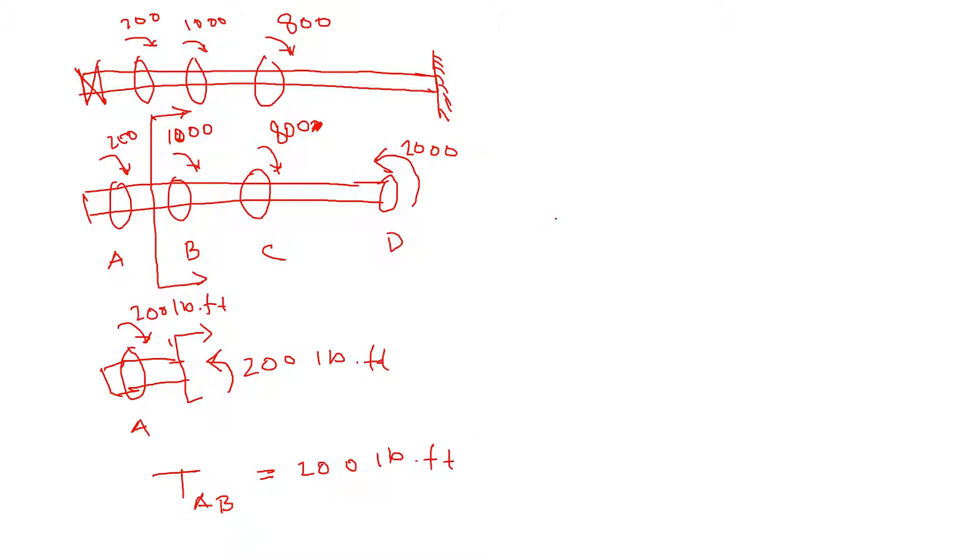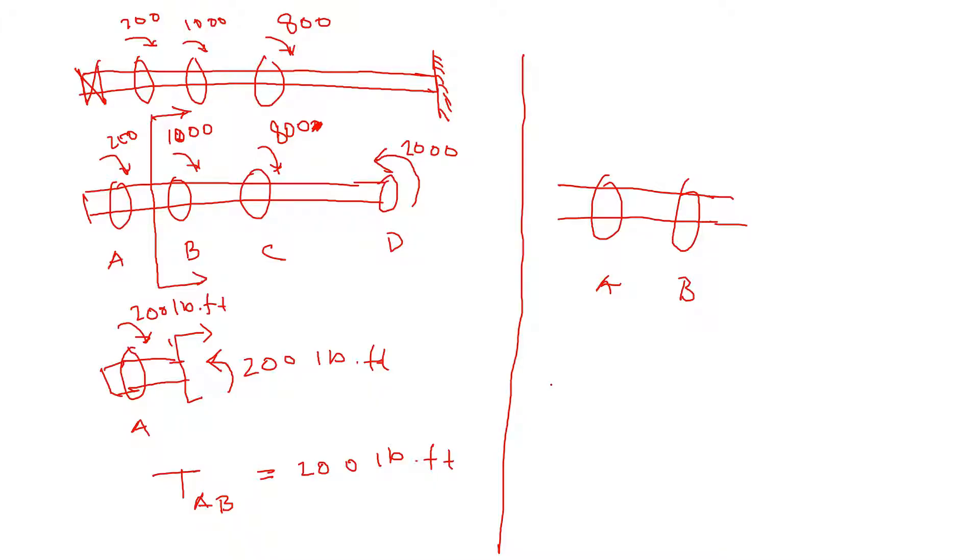Now I want to see between B and C, same thing. Just cut between B and C. So that's my shaft. A, B, and then I want to see, sorry about that. I want to see between B and C. So cut between B, so cut between them so I can see the inside of it.